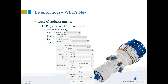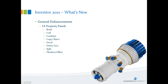The sweep and thread commands added to the UI panel also support presets — personal favorites. For example, if you're adding a specific thread type and size frequently, add it as a preset with a name. The next time you launch the command, select it from the pull-down and all information is populated. In Inventor 2021, additional commands have moved to the new panel architecture: bend, coil, decal, delete face, split, thicken, combine, and copy object — all supported in both light and dark themes.